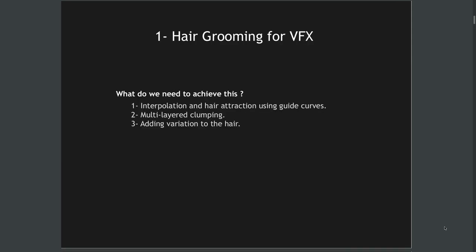What do we need to achieve this? We need three things. First, we need to be able to interpolate the hair and expand the hair count from a given set of curves — for example, taking 100 guide curves and generating 100,000 new curves that properly interpolate between all those guides. Second, we need to clump the hair and layer the clumps so we can have large, medium and small clumps. Third, we need to add variation to the hair.